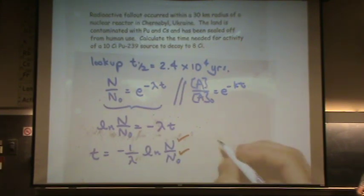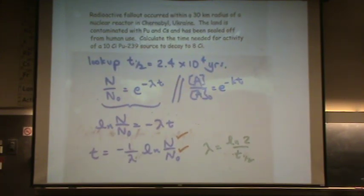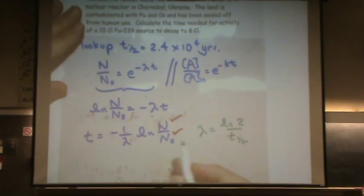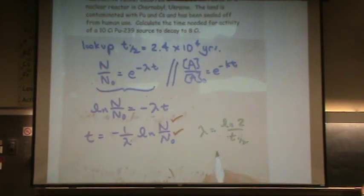Since this is first order, lambda is going to be the natural log of 2 over the half-life. Or half-life is natural log of 2 over the rate constant. So we can use this to plug in for lambda over here.